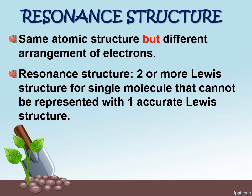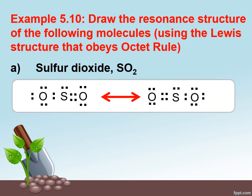So resonance structure will happen to two or more Lewis structures for a single molecule that cannot be represented with one accurate Lewis structure.